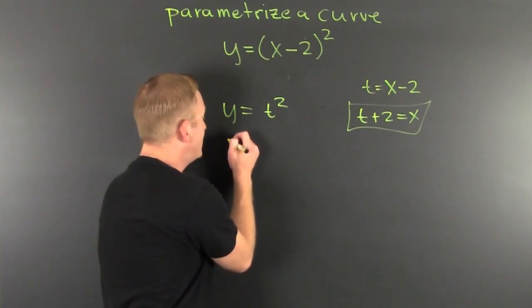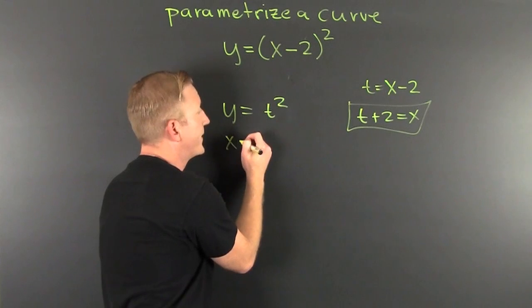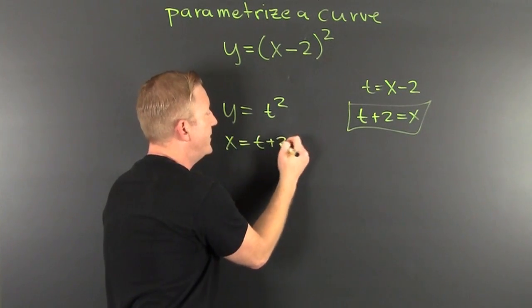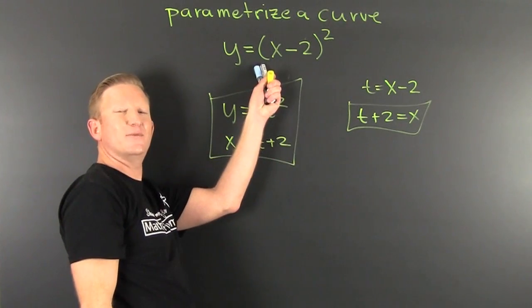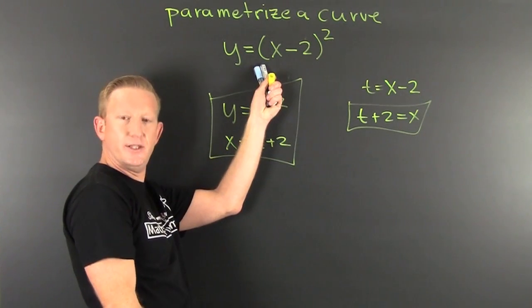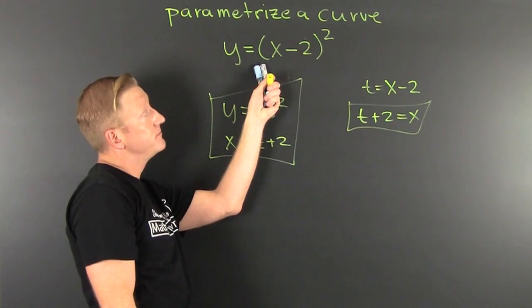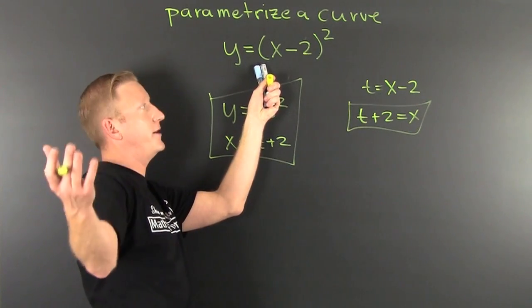It's not unique. You can do it in any form. X is equal to T plus 2. This would be a collection. That would be one parametrization of that parabola. Well, are there more?